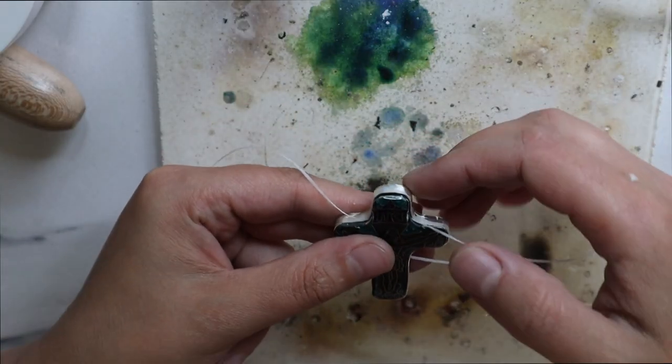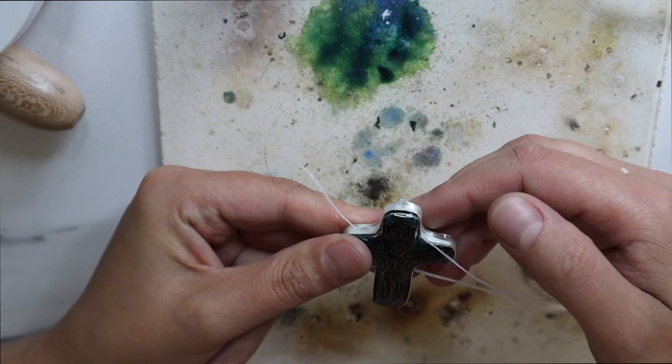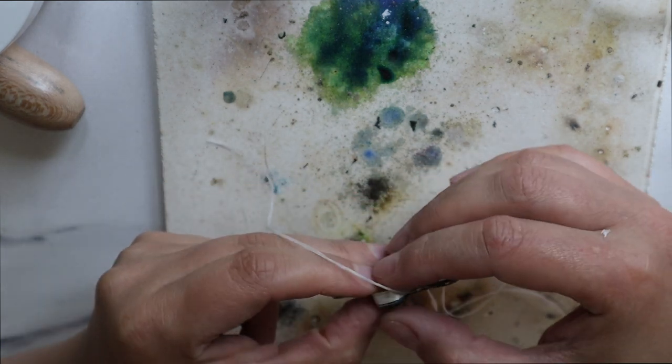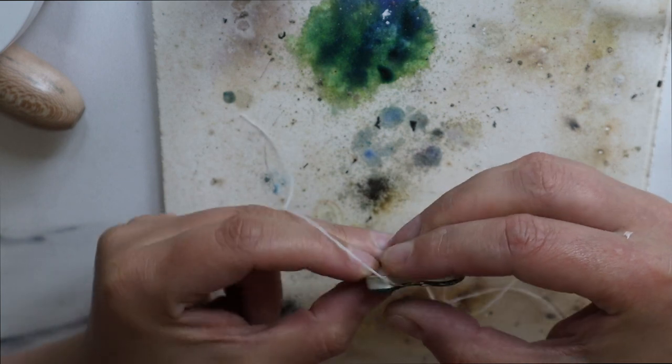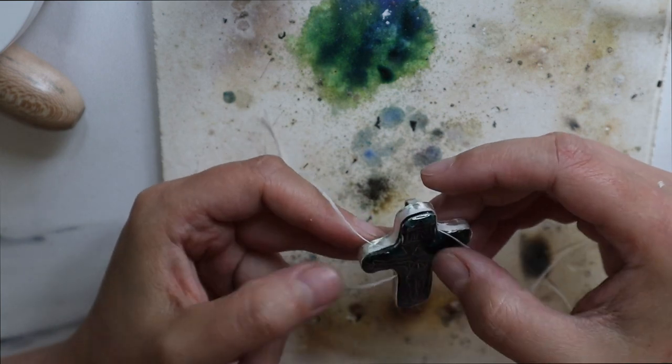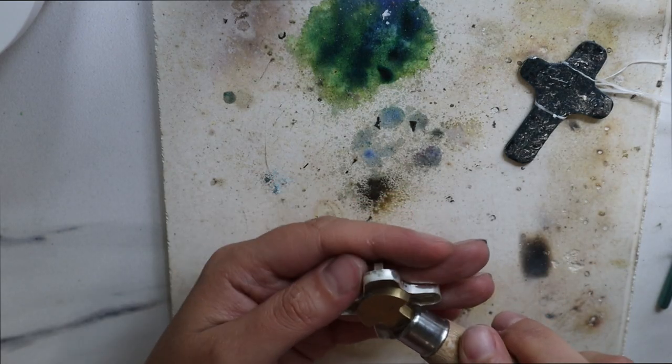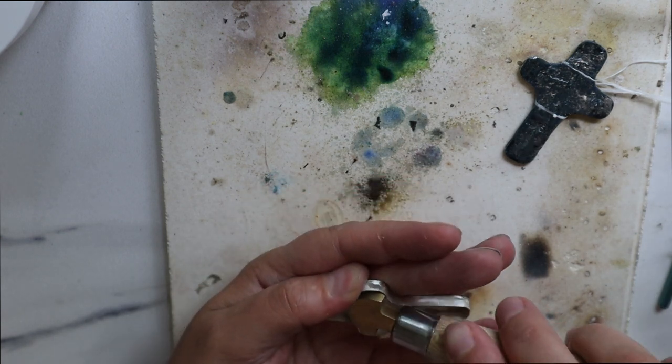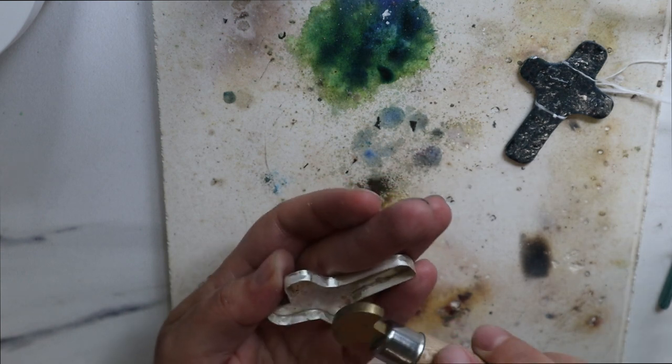Sometimes it's getting stuck and I don't want to make some damage. As you can see, the bezel is a little small, it's not easily getting in. So what I'm going to do is make wider the edges just a little bit to place the cross inside easily.